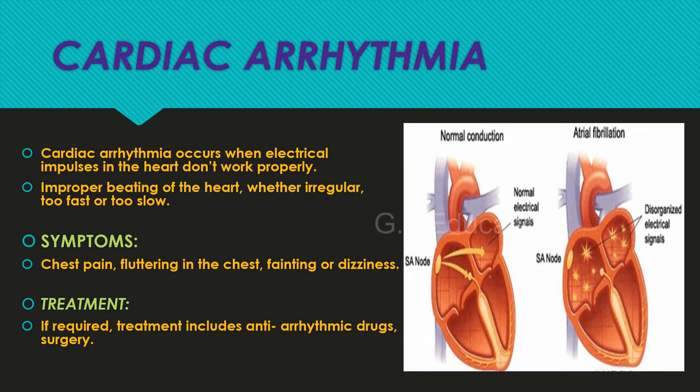Cardiac arrhythmia occurs when electrical impulses in the heart don't work properly, causing improper beating — whether irregular, too fast, or too slow. Symptoms include chest pain, fluttering in the chest, fainting, or dizziness. Treatment, if required, includes anti-arrhythmic drugs and surgery.